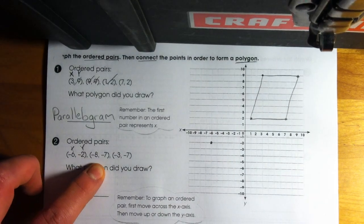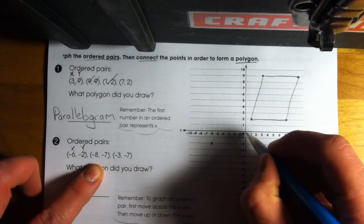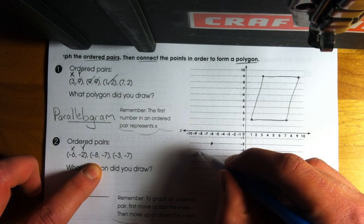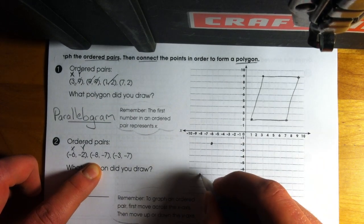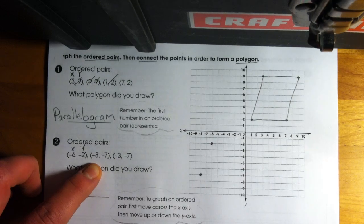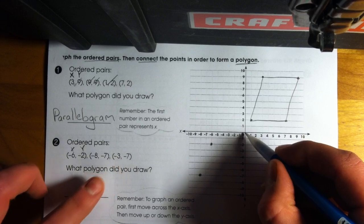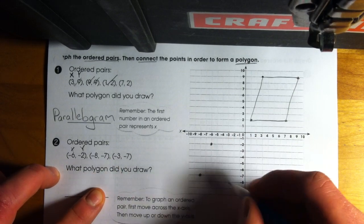So there's my first point. And I see I have the next ordered pair, negative 8, negative 7. So I move to the left 8 spaces, and then I'm going to move down 7 spaces. The reason I know I'm working this is because I'm working with 2 negative numbers. And then it looks like our last one is negative 3, negative 7. So I move to the left 3 spaces, and then down 7 spaces.